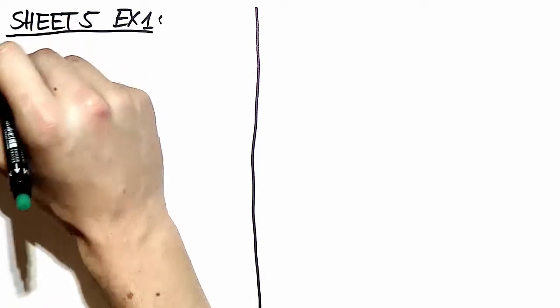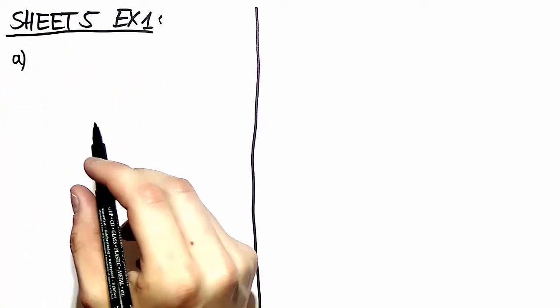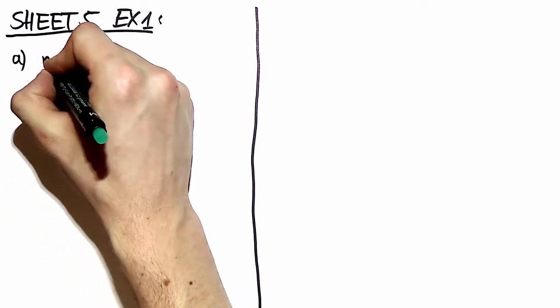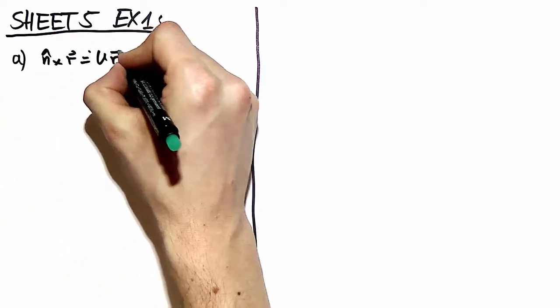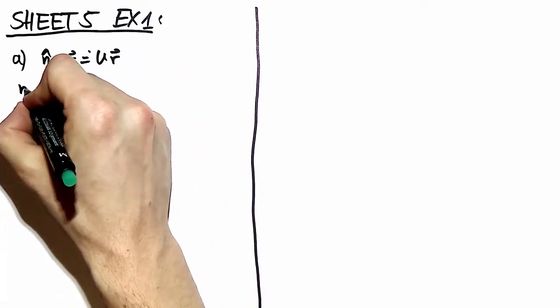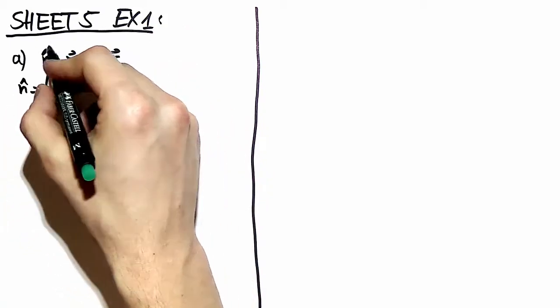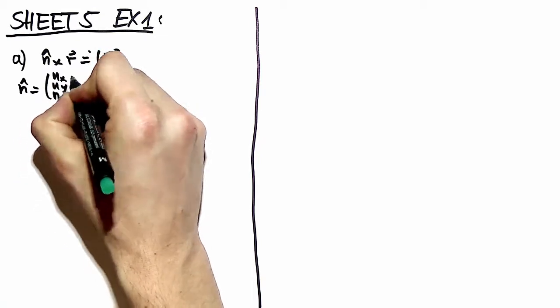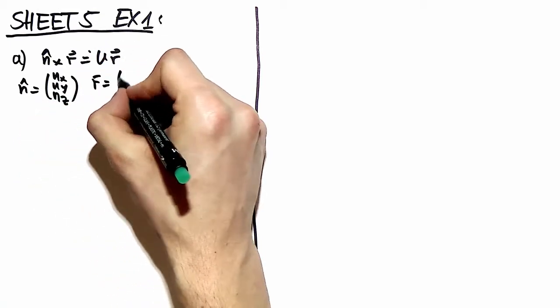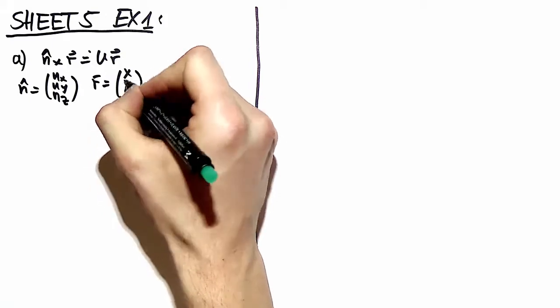But first of all, in the first part of this exercise, we do some preliminary stuff. We want to find a matrix which gives us the cross product. And to do that, we write simply the different vectors in their components. R is equal to x, y and z.